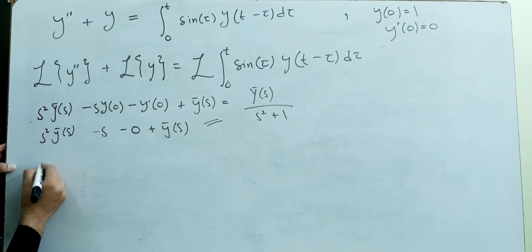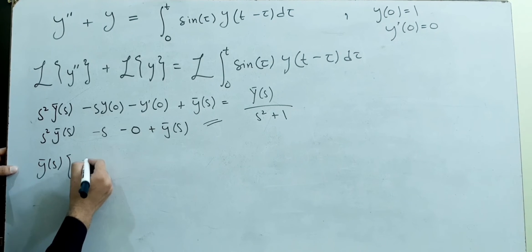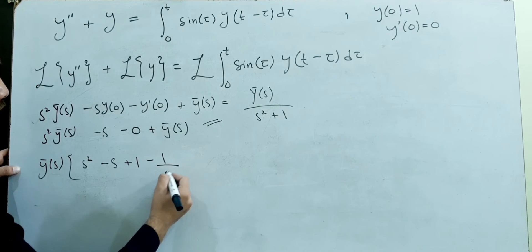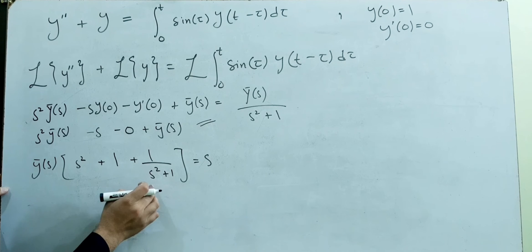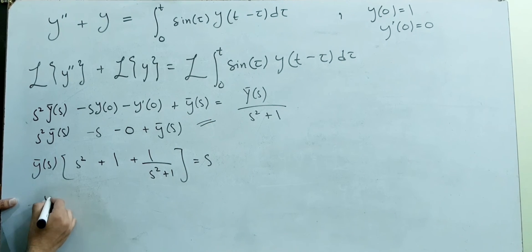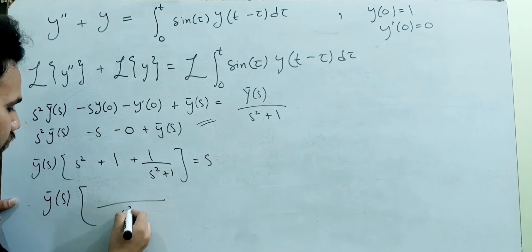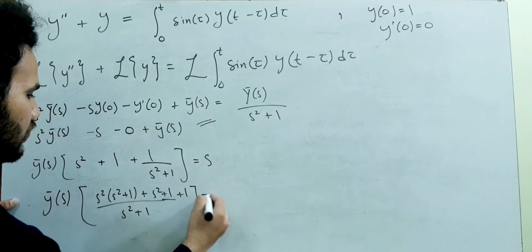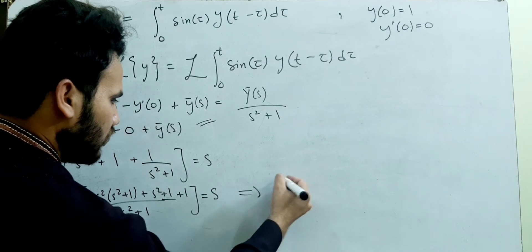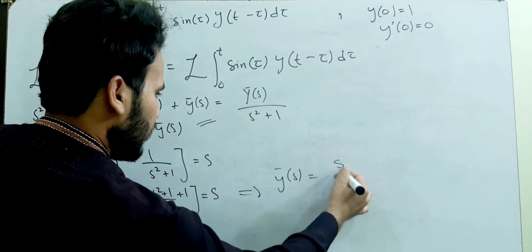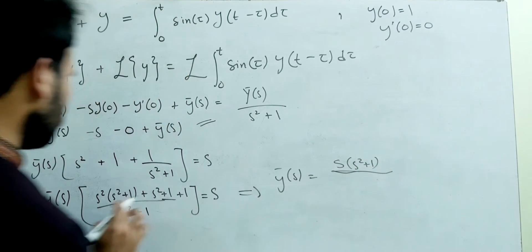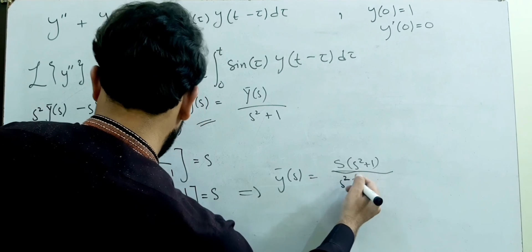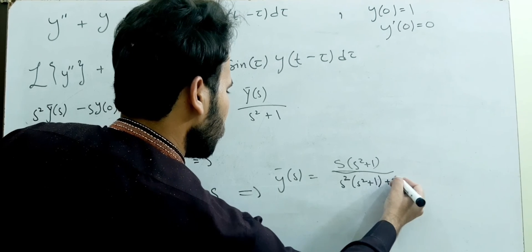Collecting all y̅(s) terms: y̅(s) times [s² + 1 minus 1/(s² + 1)] equals s. Taking the LCM and simplifying, the numerator becomes s² + 1 and combining gives y̅(s) times (s² + 2)/(s² + 1) equals s, so y̅(s) = s(s² + 1)/(s²(s² + 2)) which simplifies to s/(s² + 2).